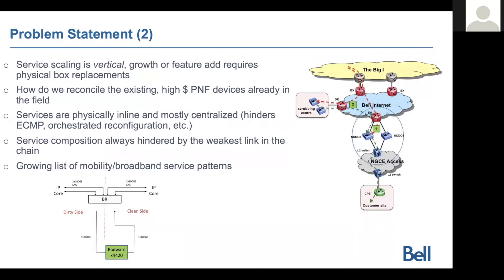Problem statement number two: we now do service function scaling based on vertical growth. Because these functions are in the network with all the associated complexity, we have a tendency to grow these functions vertically — we buy more, we increase the capability because for some instances we might need high throughput or specific requirements.